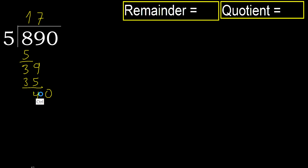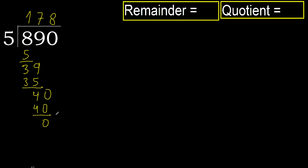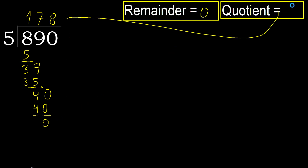40: 5 multiplied by 8 is 40 — is not greater, ok. Subtract. That is not a number, therefore finish it. 890 divided by 5 is 178.